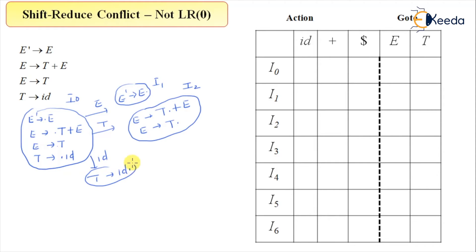On input plus, E derives T plus dot E. Again, E production will be included: E derives dot T plus E, and E derives dot T, and T derives dot id, reason dot is in front of E, and here dot is in front of T. And that is my I3, and this state, new state, is your I4.